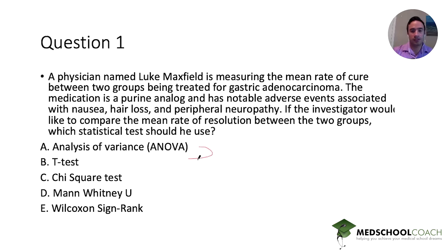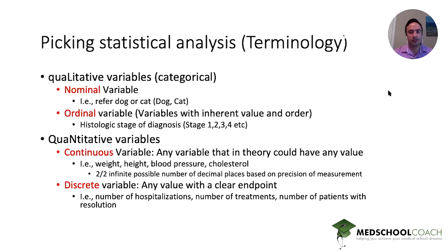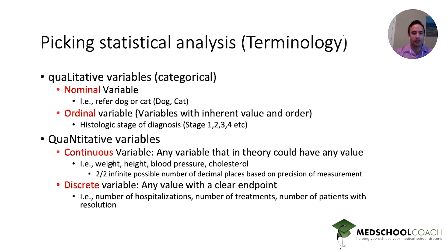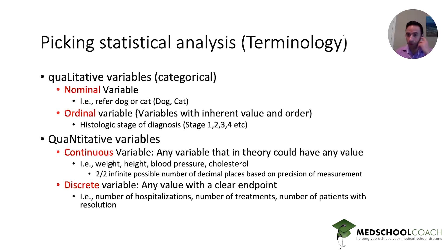We need to take a step back and identify some terminology used by biostatisticians. They categorize data into categorical data, which includes nominal and ordinal variables, and a different subset which includes continuous and discrete variables. As physicians, we use the words qualitative and quantitative more freely. For categorical variables, just think of them as synonymous with qualitative — there's no unique number value assigned to them, other than just categories or groups.